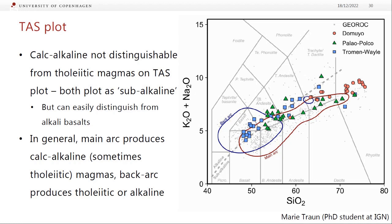On the TAS plot, calc-alkaline magmas are not particularly distinguishable from tholeiitic magmas — both fall in the sub-alkaline field below the alkaline/sub-alkaline boundary. Main arc volcano compositions mostly fall in the sub-alkaline field. However, in the back-arc region — where there's decompression melting — some do fall in the alkali basalt field. In general, the main arc produces calc-alkaline magmas (and sometimes tholeiites) while the back-arc produces tholeiitic or alkaline magmas, because the back-arc is further from fluid addition and dominated by decompression melting.